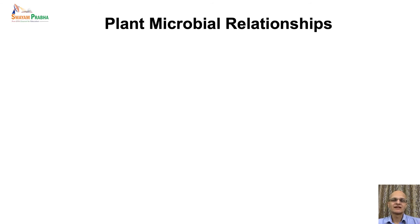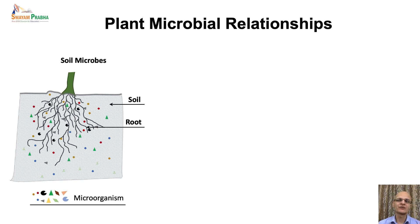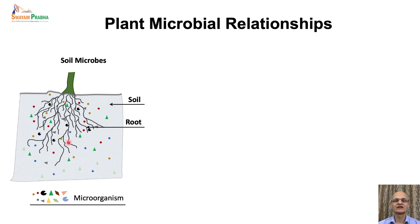Now let's start with plant-microbial relationships. In the soil there exist different levels of intimacy between plants and microbes. Some microbes are intimately associated with the plant while others stay in close vicinity but do not directly enter the system. The closer the microbe is to the plant roots, the more the plant influences the microbial community, and the more the microbes influence the plant.